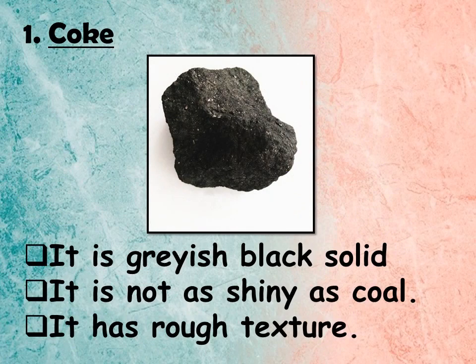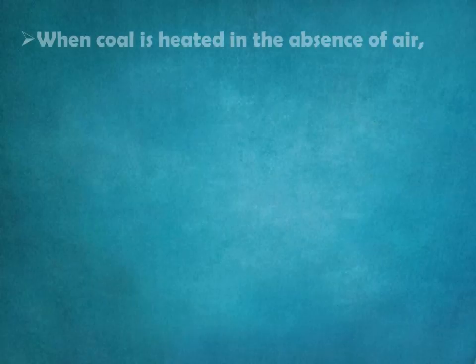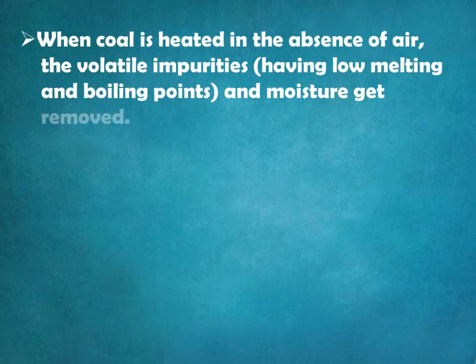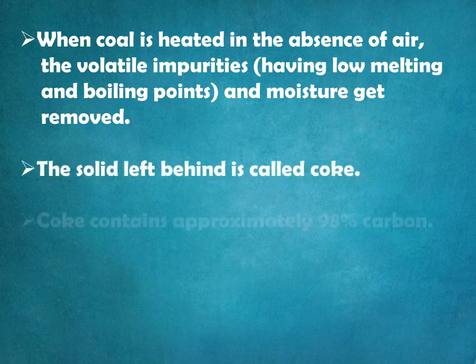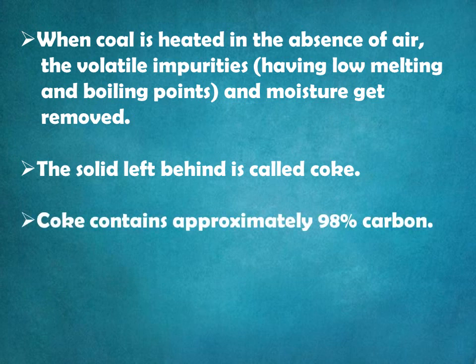Coke is a greyish black solid. It is not as shiny as coal and it has a rough texture. When coal is heated in the absence of air, the volatile impurities and moisture get removed, and the solid left behind is called coke. Coke contains approximately 98% carbon.